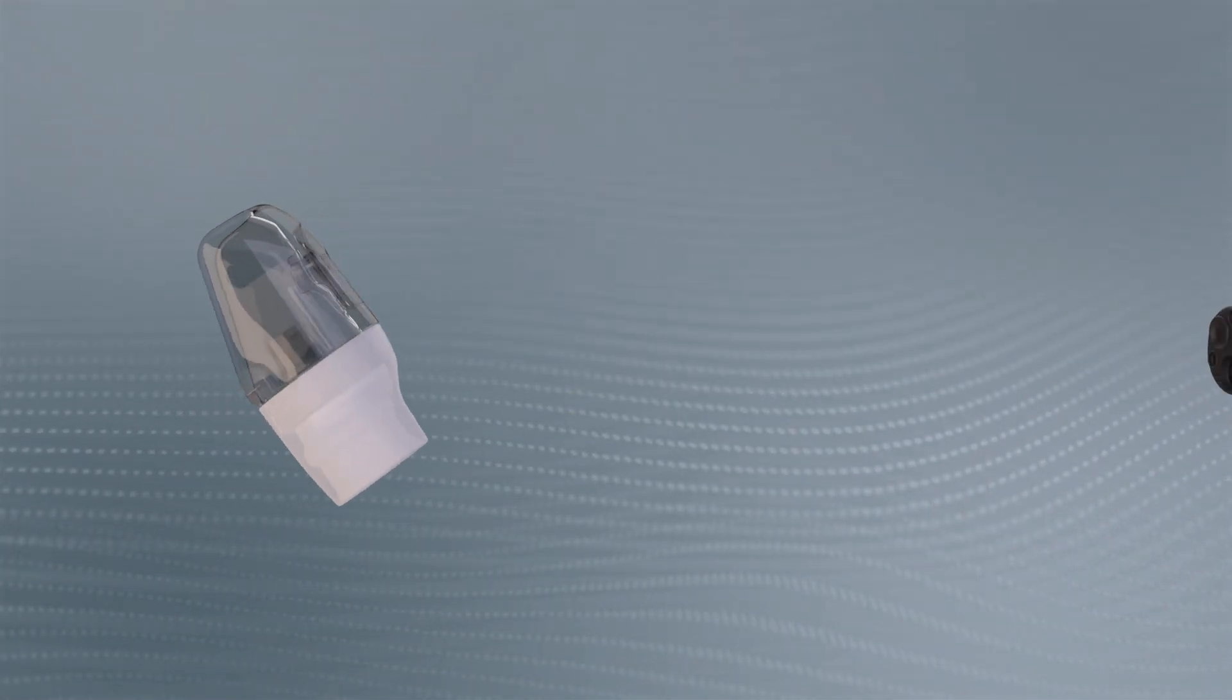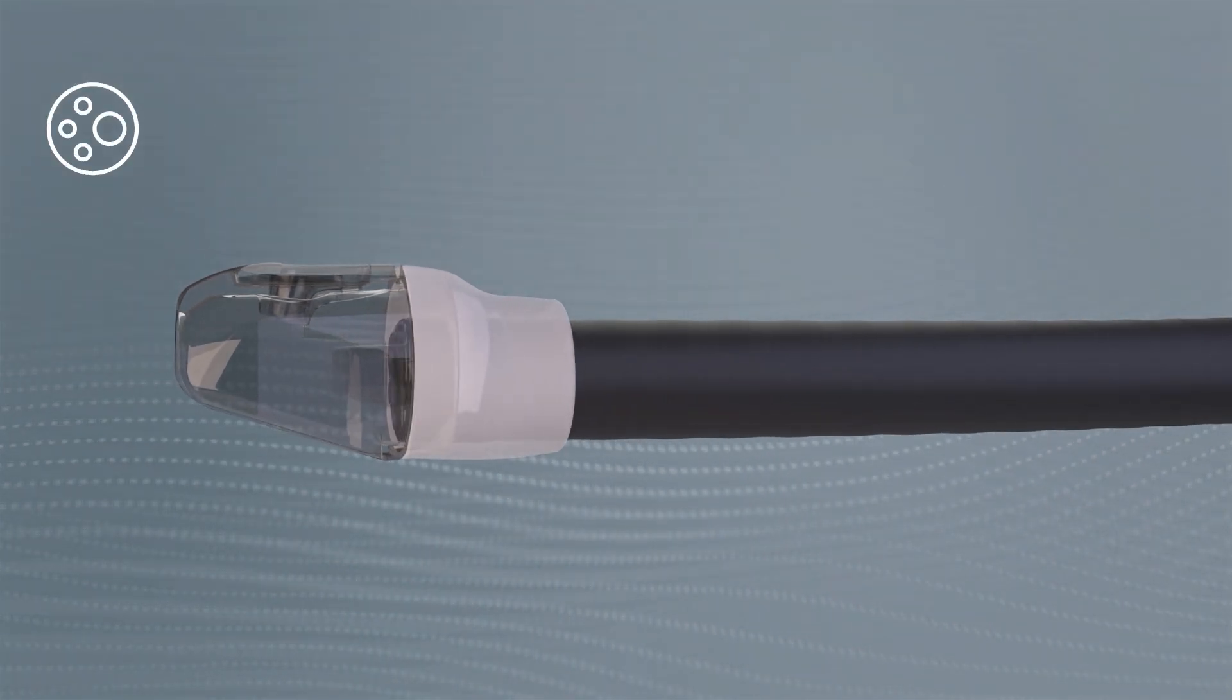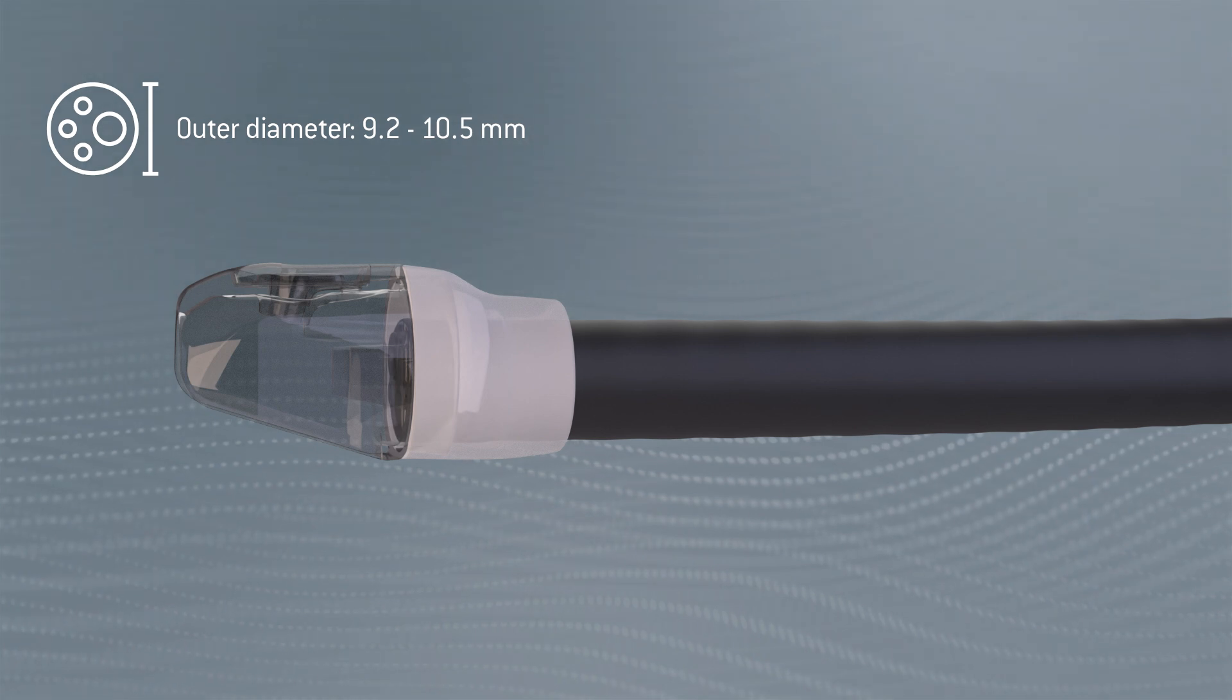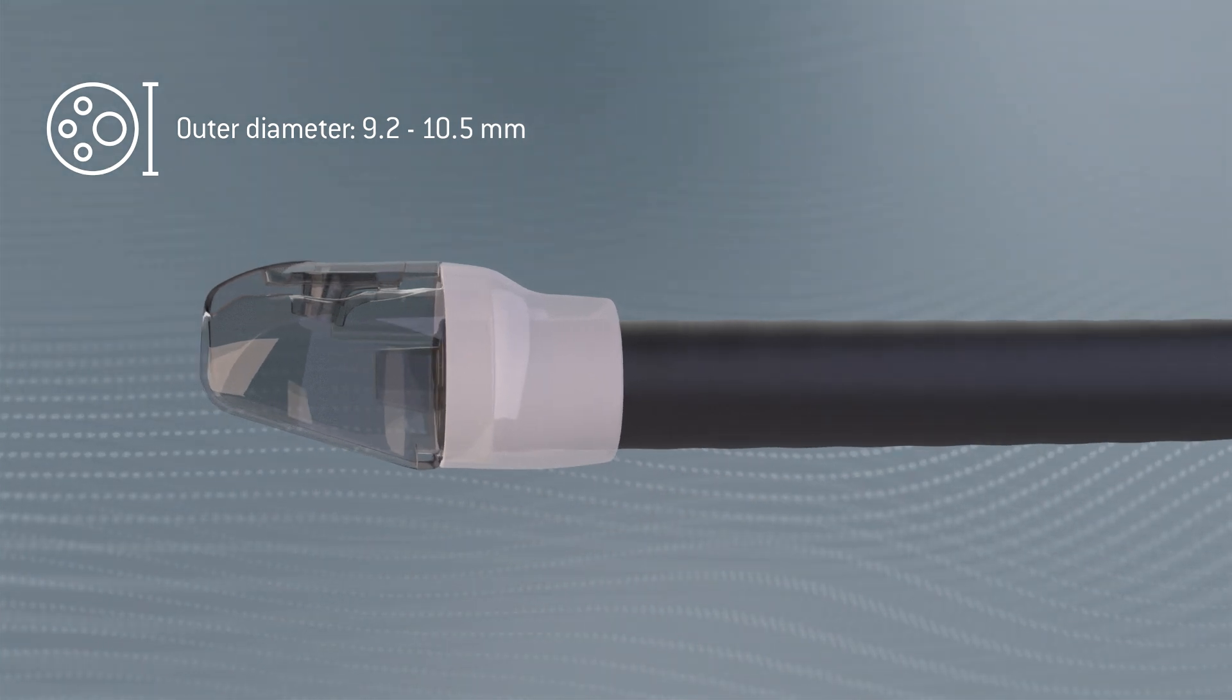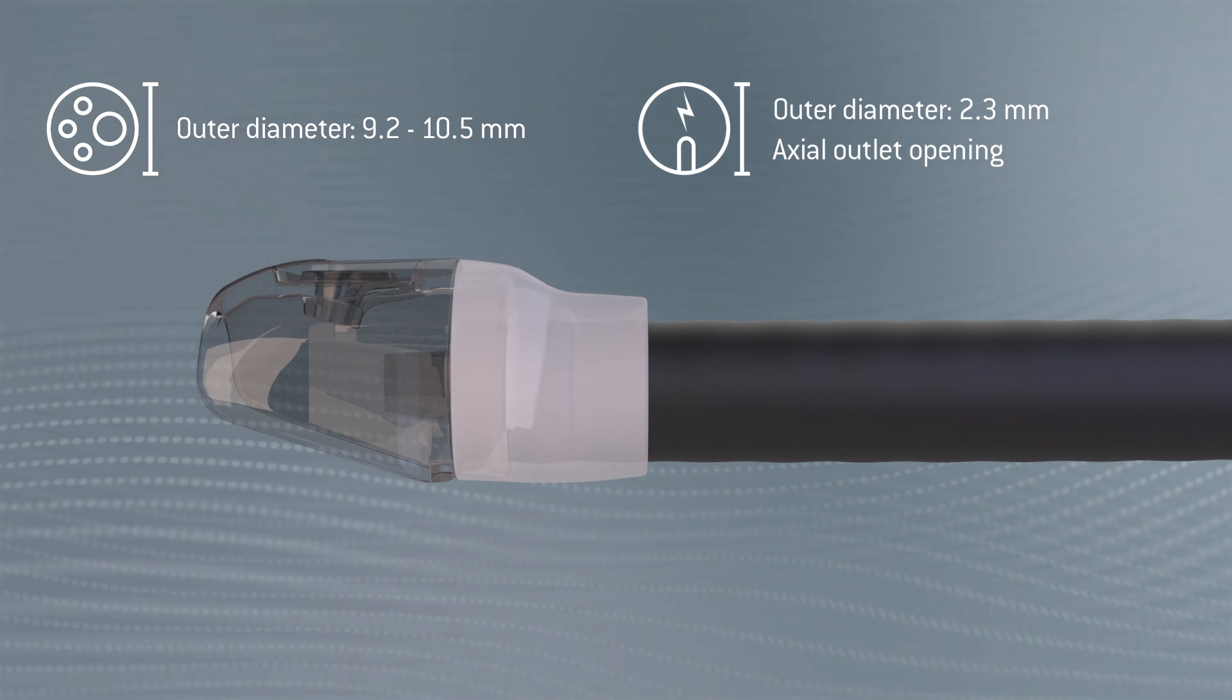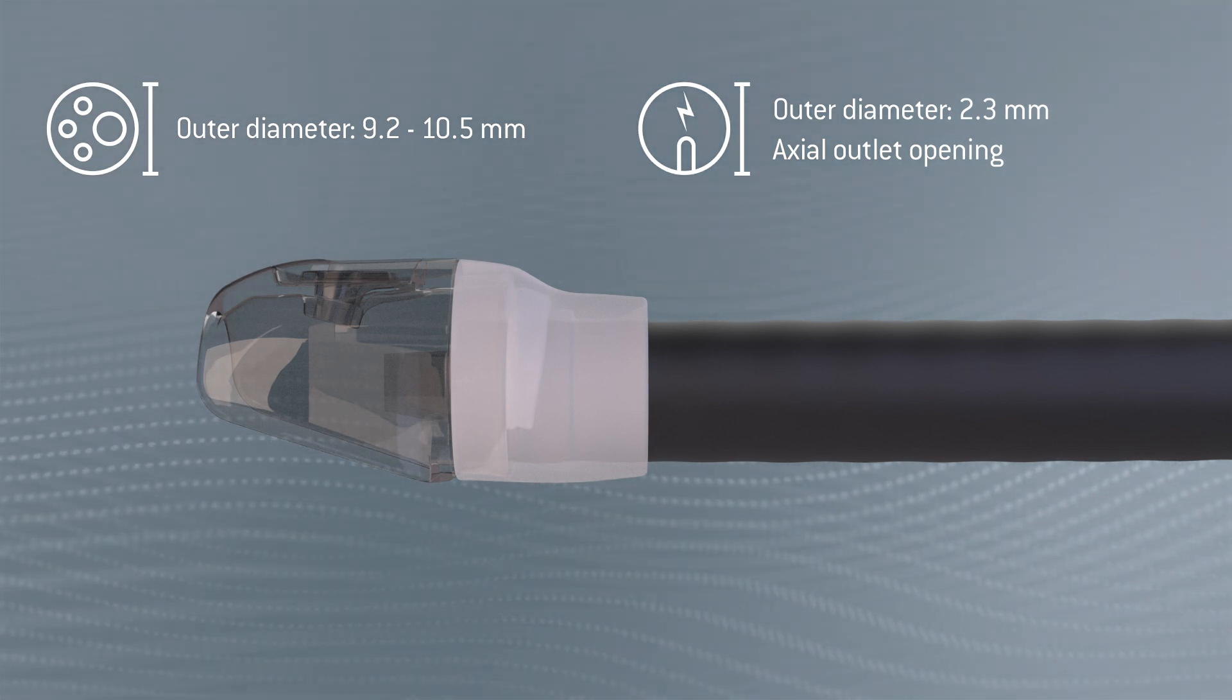The cap serves as a guide for the probe and is designed for flexible endoscopes with an outer diameter of 9.2 to 10.5 mm. APC probes with an outer diameter of 2.3 mm and an axial outlet opening are compatible.